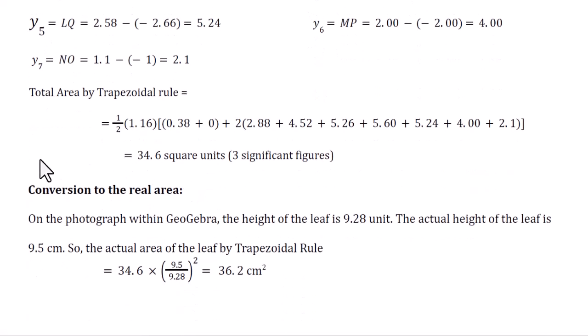Then we will convert this area into the real area. On the photograph within GeoGebra, the height of the leaf is 9.28 units. The actual height of the leaf is 9.5 cm, so the actual area of the leaf by trapezoidal rule equals 36.2 cm squared.